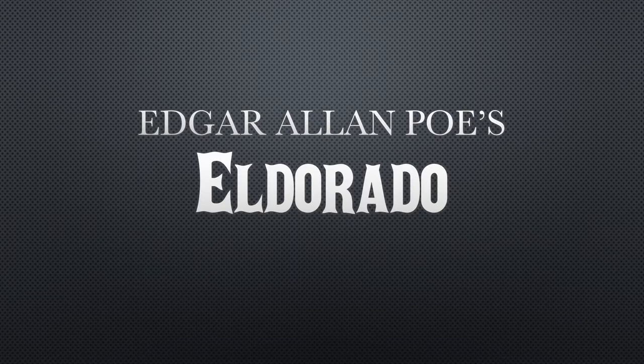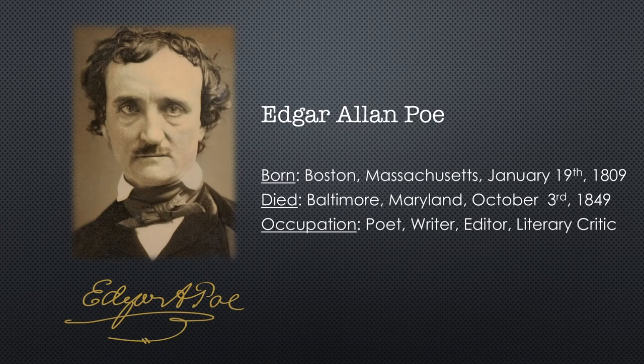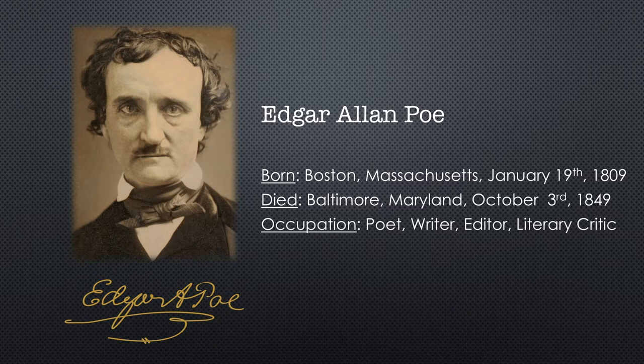Hello, everyone. This is Quentin, and this is an introduction to Edgar Allan Poe's El Dorado. Edgar Allan Poe was a poet, a writer, an editor, a literary critic. He's probably most famous for writing very scary short stories, but he's also known as a poet. Unfortunately, Edgar died at a very early age. He was born in 1809 and died in 1849, but in his short life he produced a great number of works that still continue to entertain and inspire us even until today.